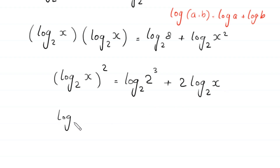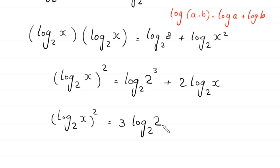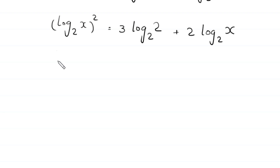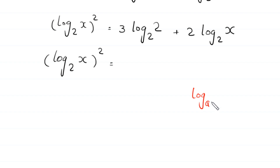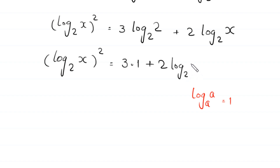Now, log base 2 of x squared equals log base 2 of 2 to the power 3, which becomes 3 times log base 2 of 2, plus 2 times log base 2 of x. Using the property log base a of a equals 1, this 3 times log base 2 of 2 becomes 3 times 1.